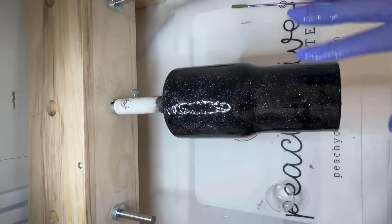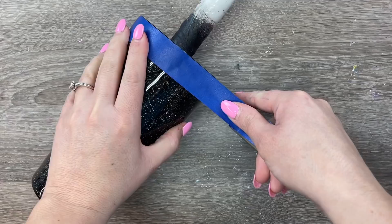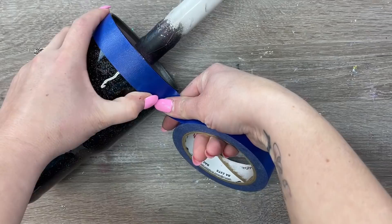Four hours has gone by and my cup is dry enough and I am going to tape off the lines for what will be our white stripes. I'm using one inch blue painter's tape and I'm going to start at the very top rim of my cup and tape these lines as straight as possible.